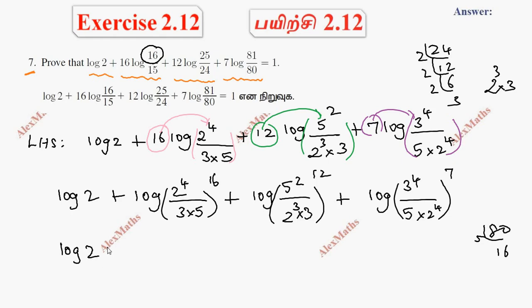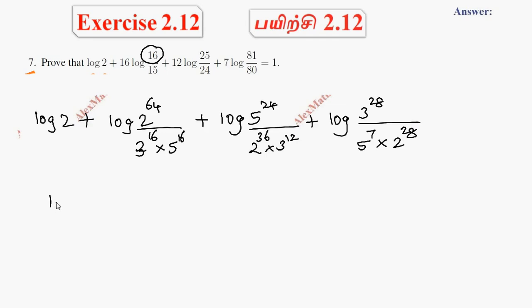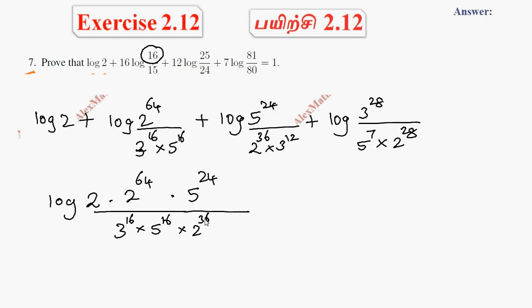Expanding the powers: this is log 2. Plus log of 2⁶⁴ divided by 3¹⁶ times 5¹⁶. Plus log of 5²⁴ divided by 2³⁶ times 3¹². Plus log of 3²⁸ divided by 5⁷ times 2²⁸.